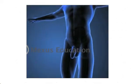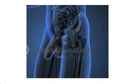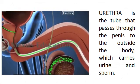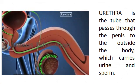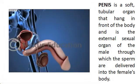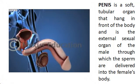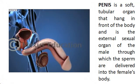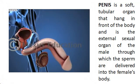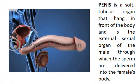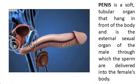Let us start first with the male reproductive system. The urethra is the tube that passes through the penis to the outside of the body, which carries urine and sperm. The penis is a soft, tubular organ that hangs in front of the body and is the external sexual organ of the male through which the sperm are delivered into the female's body. It contains erectile tissue that makes the penis larger and stiffer due to increased flow of blood during ejaculation.